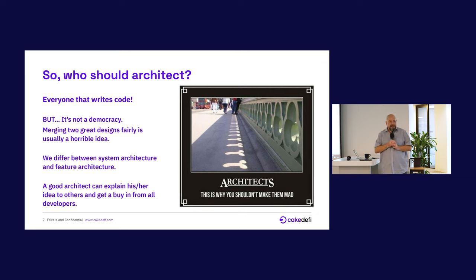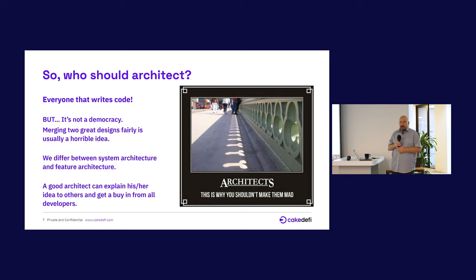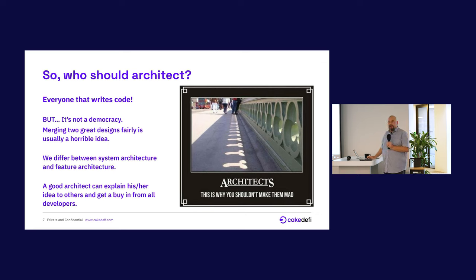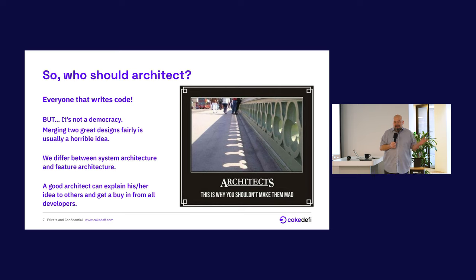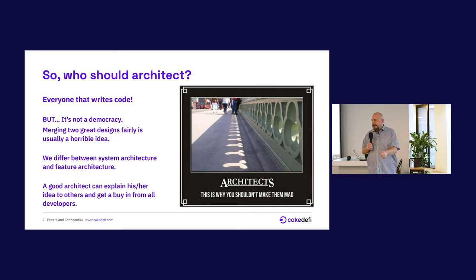We differentiate between system architecture and feature architecture. System architecture — we decide, we set, we can change it, but that always comes with a cost. Feature architecture — we do all the time, anyone is free to pick that task up. We should have them as JIRA tasks. A good architect can explain their idea to others and get buy-in from all other developers before we get started. This is where the skill of talking in front of people comes in — it didn't come naturally to me. Do I want to spend three years implementing someone else's shitty architecture, or do I want to make someone else implement mine? If you can't explain it simply, you don't understand it well enough.